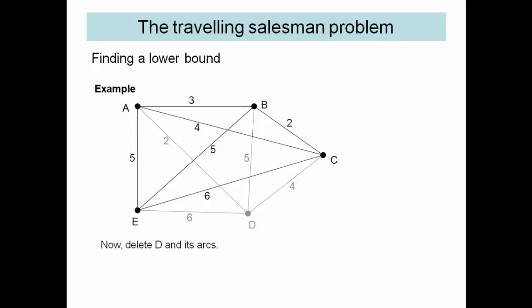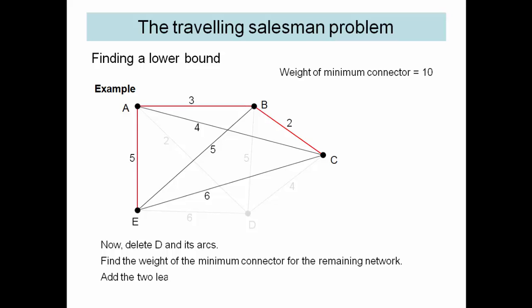We delete D. Minimum connector of 10 again, and the two smallest again takes us to 16.